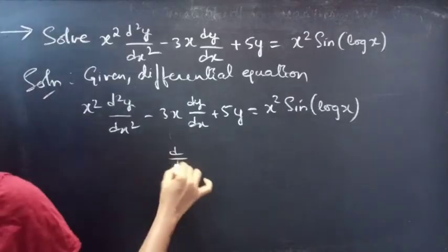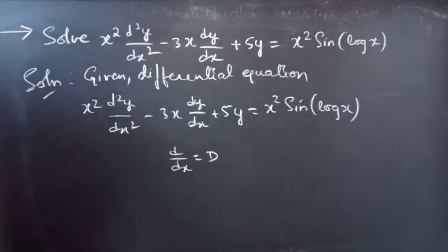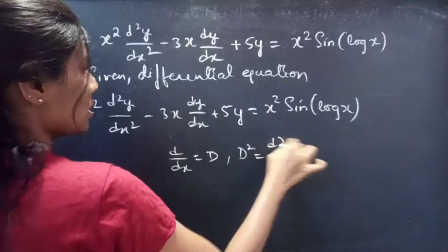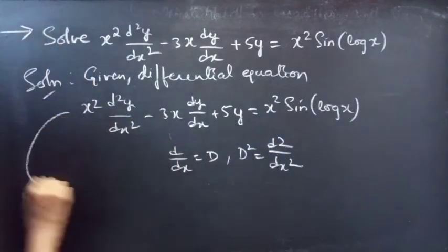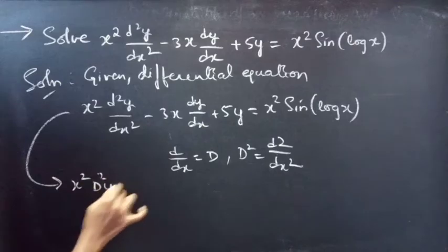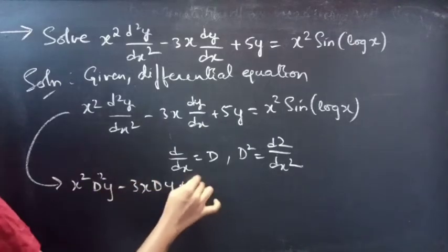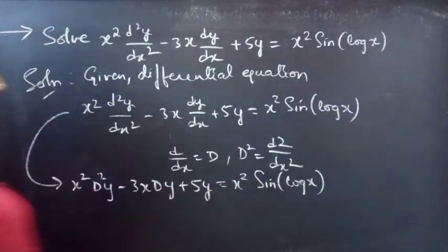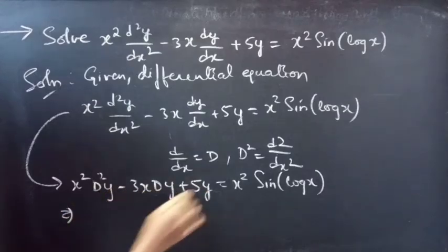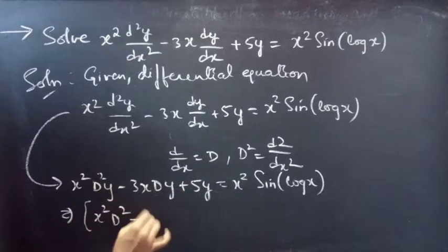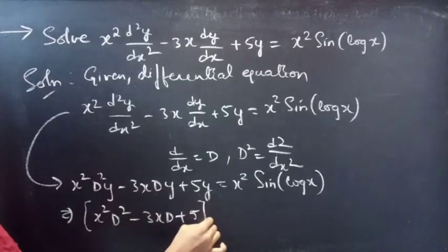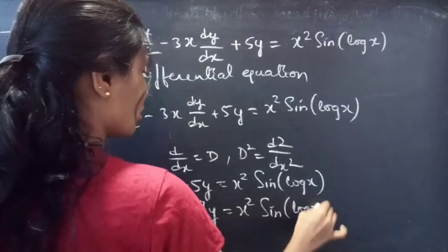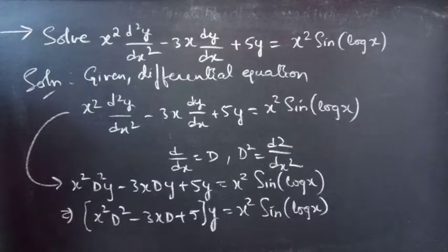We know that d/dx is equal to differential operator D. Here x is an independent variable for D, and D squared will be d²/dx². We can write the given equation as x² D²y minus 3x Dy plus 5y equals x² sine(log x). Taking y common from all three terms of the LHS, we get (x²D² minus 3xD plus 5)y equals x² sine(log x), which is a Cauchy equation.